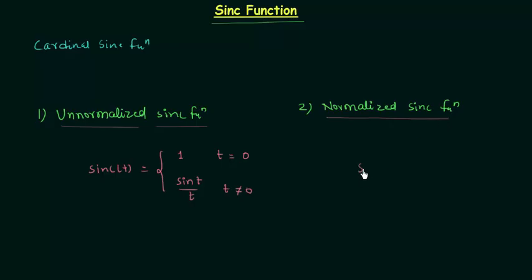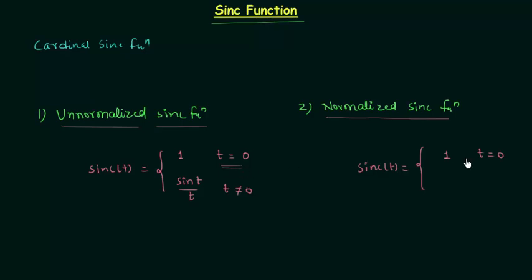In digital signal processing and information theory we use the normalized sinc function. Let's define the normalized sinc function. When t = 0, sinc(t) = 1, which is the same as for the unnormalized sinc function.